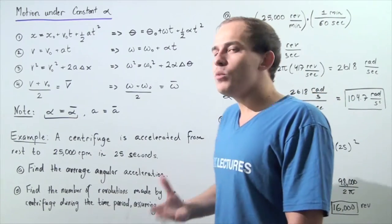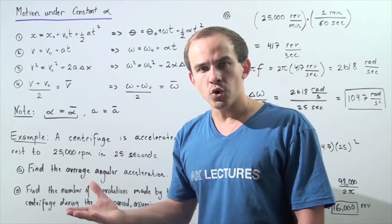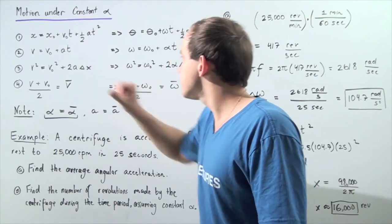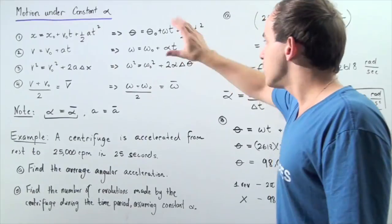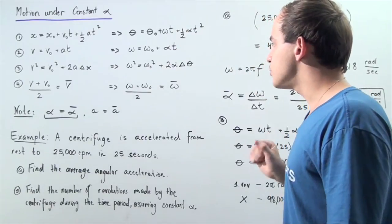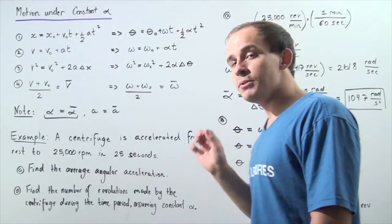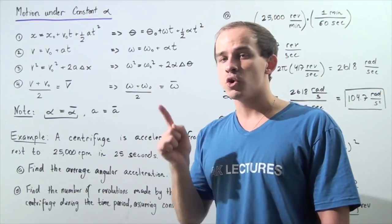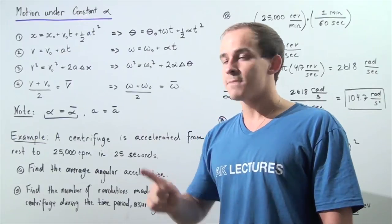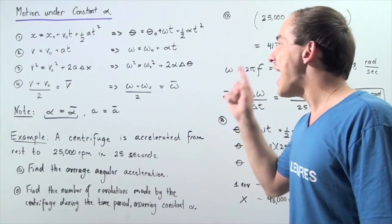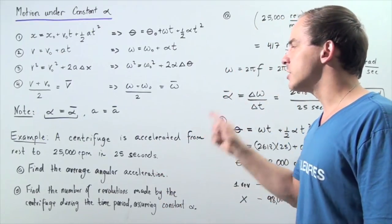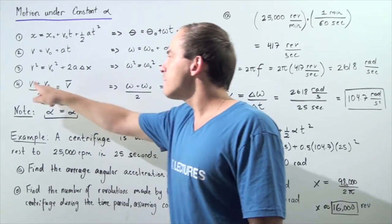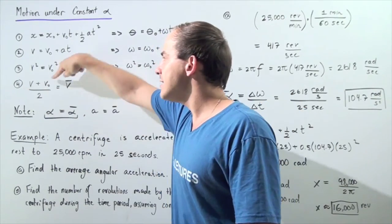Notice all we have to do going from these translational equations to these angular equations was simply to replace our translational physical quantities with the angular physical quantities. So we replaced the final and initial linear velocity with the final and initial angular velocity.